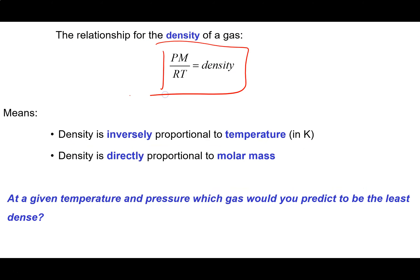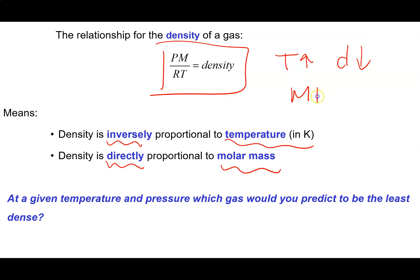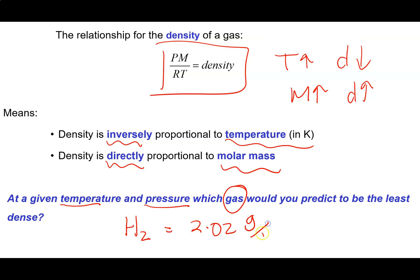Our expression tells us two big things: density is inversely proportional to temperature in Kelvin — as temperature goes up, density goes down — and density is directly proportional to molar mass. If temperature and pressure are fixed, the least dense gas would be the one with the smallest molar mass. That gas is H2, with a molar mass of 2.02 grams per mole — no gas has a smaller molar mass.